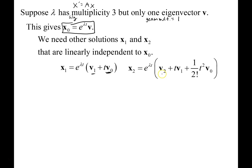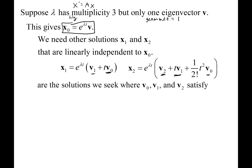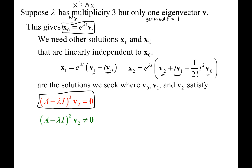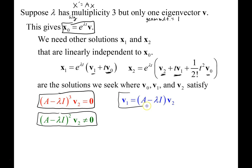It looks similar — we have the linear part — but now we're going to need a third part, kind of like a quadratic term. The v0 and v1 in the x2 solution are the same as the v0 and v1 in the x1 solution. To make this happen, we need to satisfy some equations. This time it's going to be (A − λI)³ on v2 equals 0, and we have a chain structure: one eigenvector and two generalized eigenvectors.